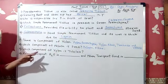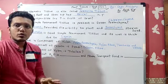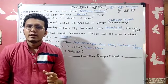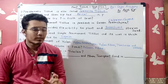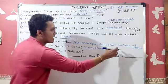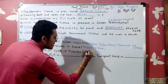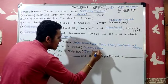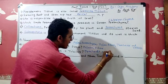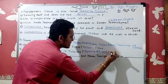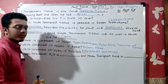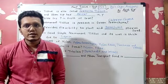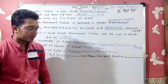Which component of xylem is tubular? Tracheids and vessels are tubular in shape, which is why they can be used to transport water — they can uptake water because of this tubular structure.